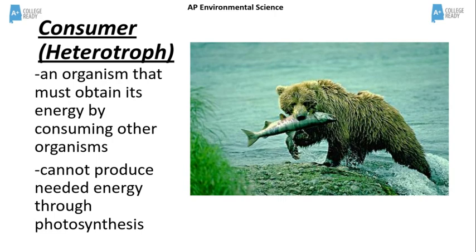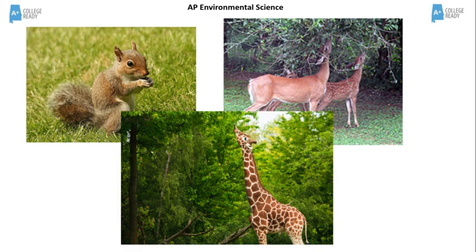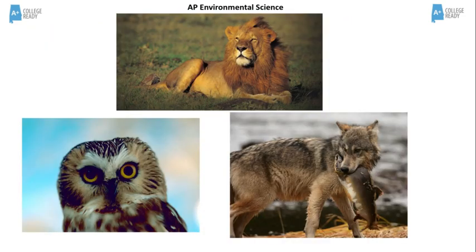Another name for consumers is heterotrophs. Consumers can be classified as herbivores or carnivores. Herbivores eat producers and may also be called primary consumers. Carnivores eat other consumers and may also be called secondary consumers. Some examples of herbivores are squirrels, deer, and giraffes. And some examples of carnivores are owls, wolves, and lions.